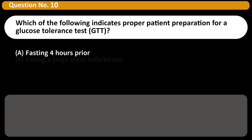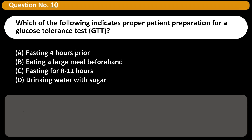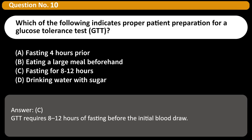Which of the following indicates proper patient preparation for a glucose tolerance test (GTT)? A. Fasting four hours prior. B. Eating a large meal beforehand. C. Fasting for eight to twelve hours. D. Drinking water with sugar. Answer: C. GTT requires eight to twelve hours of fasting before the initial blood draw.